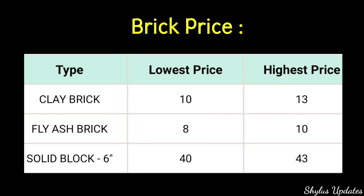Price list of bricks per brick. Type, lowest price, highest price. Clay brick is from Rs.10 to Rs.13. Fly ash bricks is from Rs.8 to Rs.10. Solid block 6 inches is from Rs.40 to Rs.43.